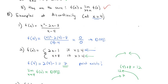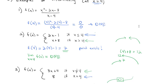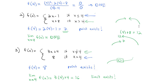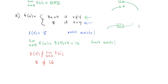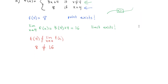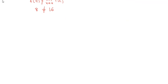So those are the three ways we can fail at being continuous. Number one, the point might not exist. Number two, the limit might not exist. Or number three, the point and the limit might be different values. Now let's look at examples of continuity.